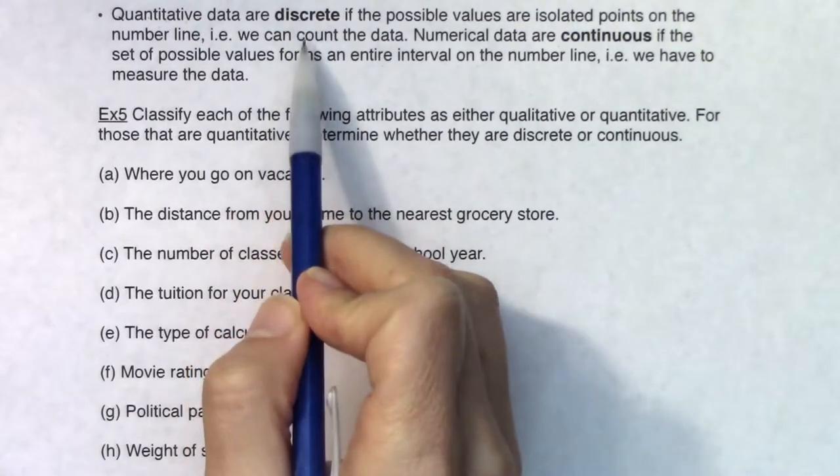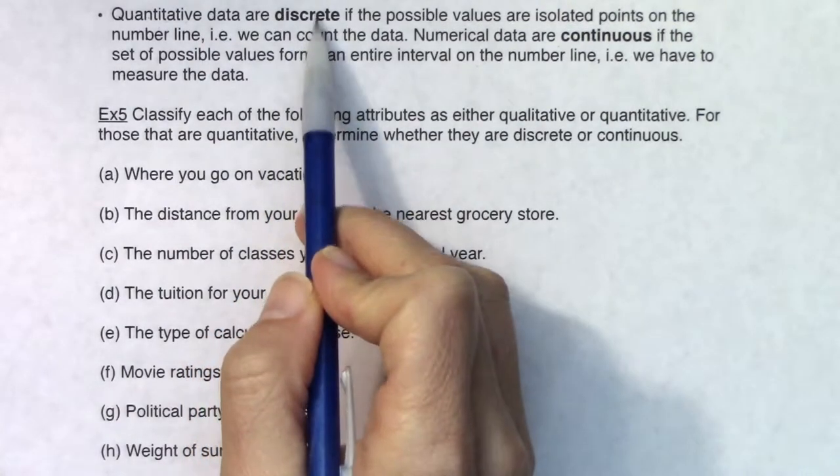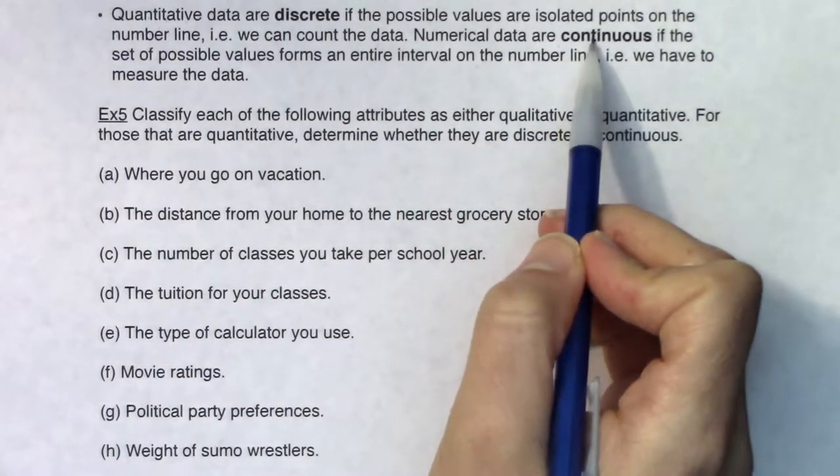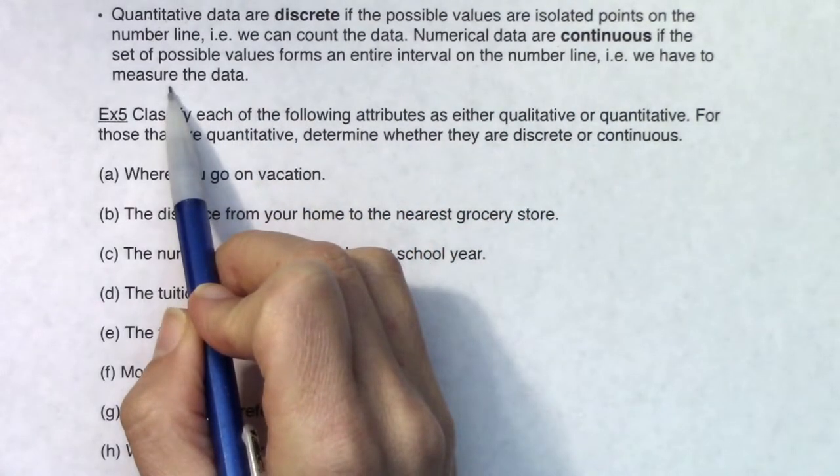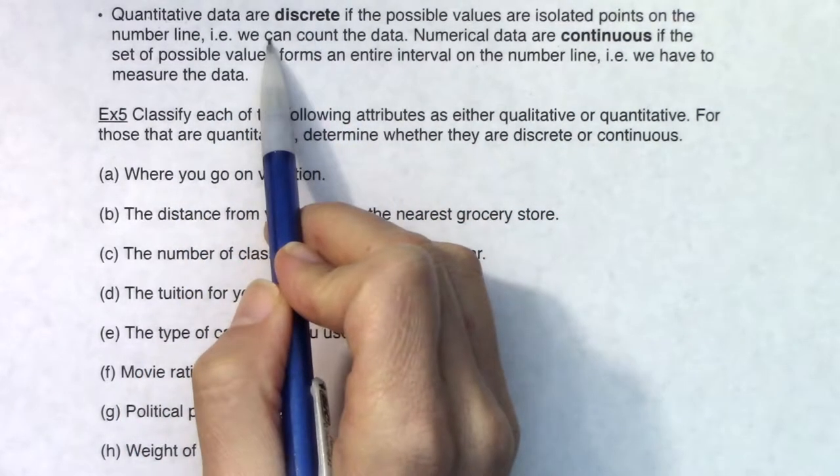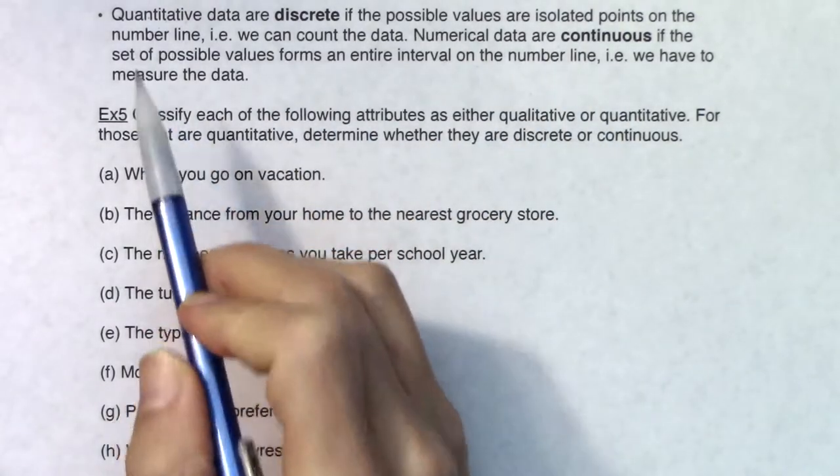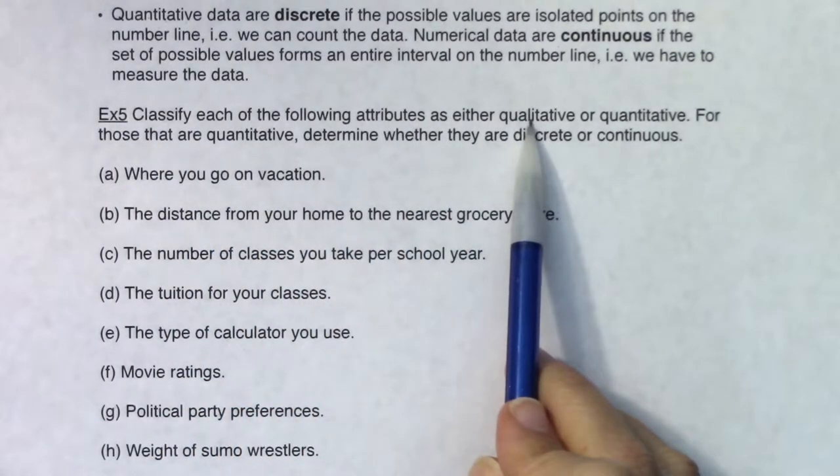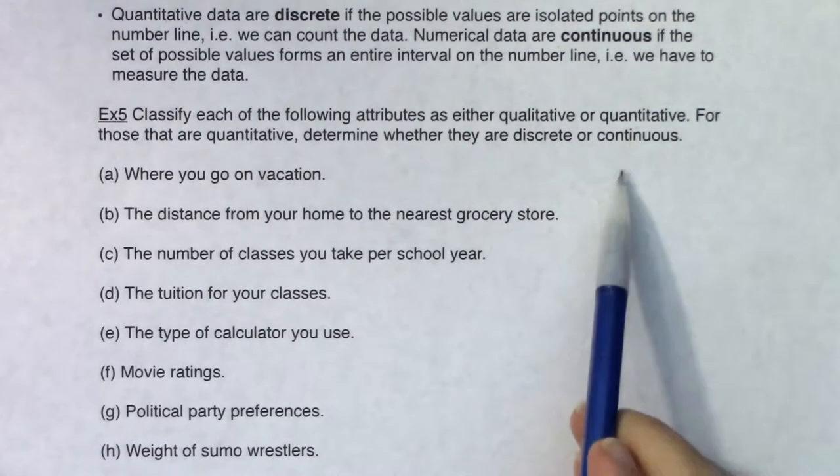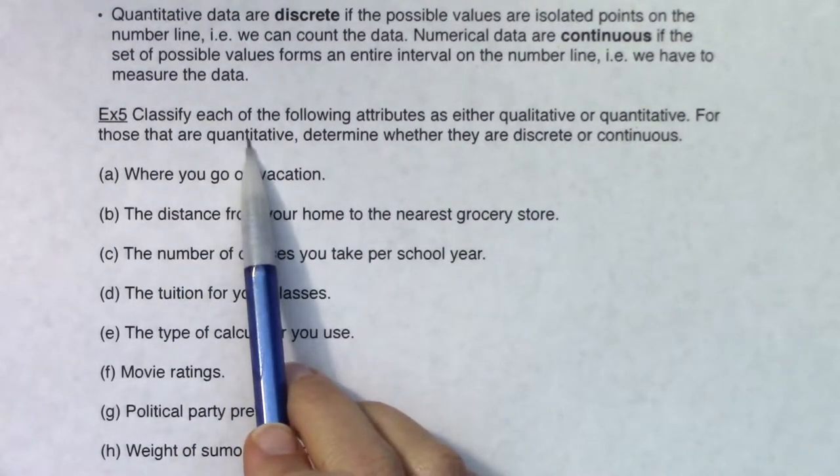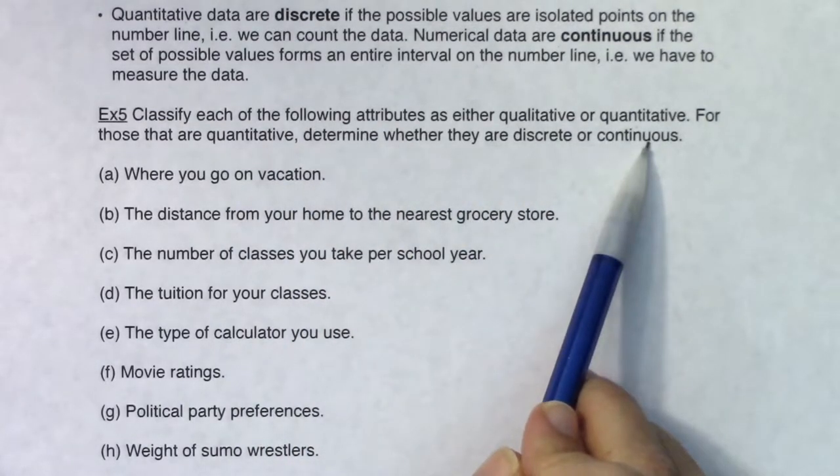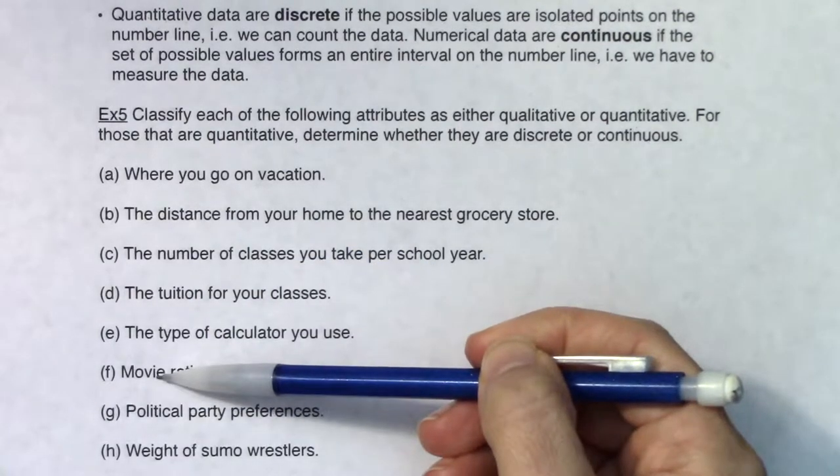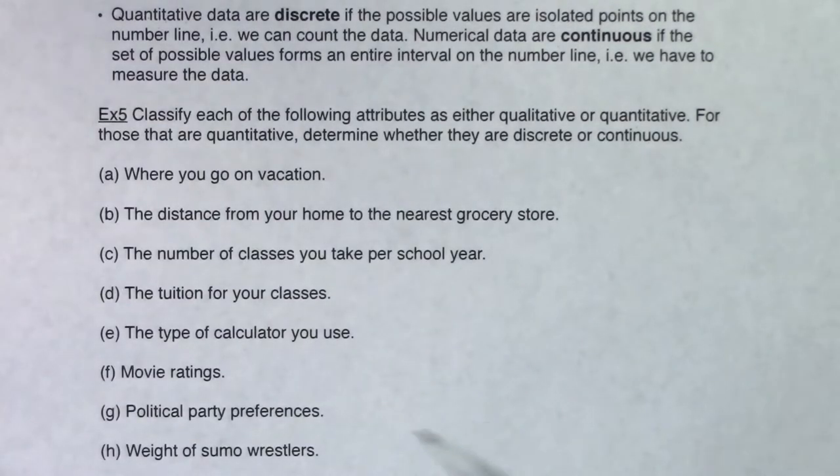We will call numerical data discrete if we can count the variable. We're going to take numerical data and say it's continuous if you're going to measure the data. So numerical data is discrete if we count it, numerical data is continuous if we measure it. Let's keep those two ideas in mind. First, do I have categorical or numerical data? Then for each time I hit quantitative or numerical, I'm going to go discrete or continuous.